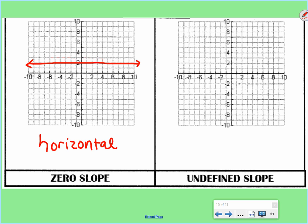Undefined slope is for our special vertical line. It goes straight up and down. It's a vertical line and it has an undefined slope.